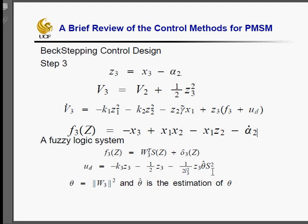Then the control UD is defined in this form. The last term of UD is actually the estimation of W3 transpose times Z. The theta hat is the estimation of the W3 norm squared.